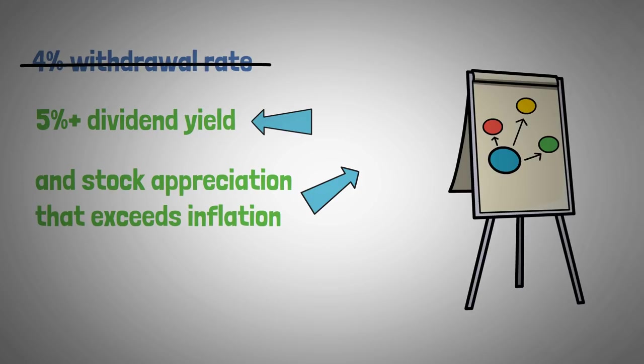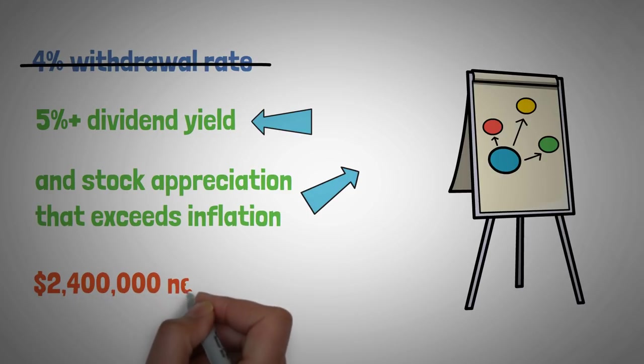If you are able to achieve a 5% dividend, you'd need $2.4 million to earn $10,000 per month or 20% less money invested.